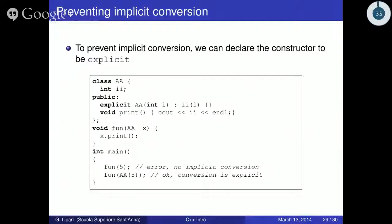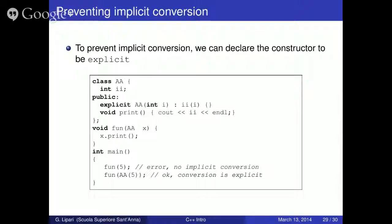To prevent this kind of implicit conversion, we can use the keyword explicit. Basically, you write explicit in front of the constructor, and this means the compiler is not allowed to implicitly convert 5 into an object of type AA. So for example, in the main, if you call fun(5), this will give you an error. However, if you call fun(AA(5)), then this is okay, because you explicitly converted the 5 into AA. The first one is probably an error; the second one is intentional.